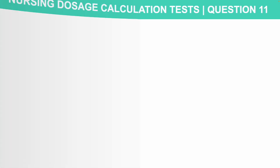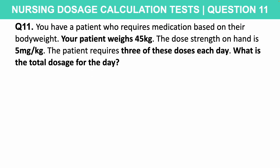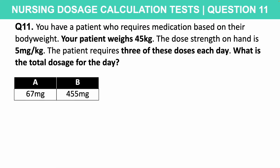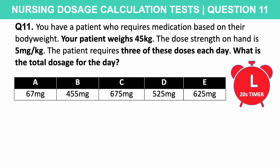Now let's look at a sample question for you to try. You have a patient who requires medication based on their body weight. Your patient weighs 45 kilograms. The dose strength on hand is 5 mg per kilogram. The patient requires three of these doses each day. What is the total dosage for the day? Is it A: 67 mg, B: 455 mg, C: 675 mg, D: 525 mg, or E: 625 mg? 20 seconds on the timer starts now.